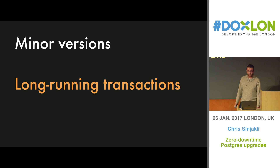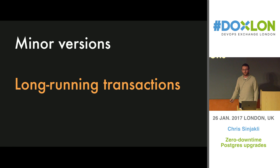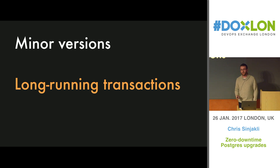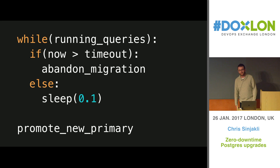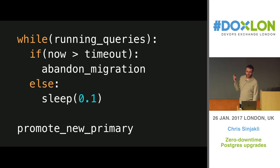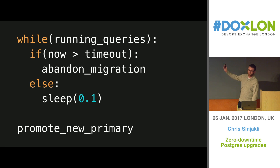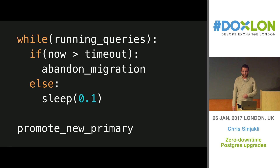Another thing is long-running transactions. If you run transactions against your database that take beyond a few seconds, you may have to interrupt them to do this process. If a query has already made it through PG Bouncer when you hit pause, it's going to keep running on the node. So you have to decide: either kill those off during the migration, or abandon the migration if those are still running. We chose the latter for safety, which means we have a busy loop: while there are running queries on the primary, wait for some timeout and poll. If we reach the timeout, abandon. If we fall through, promote the new primary.